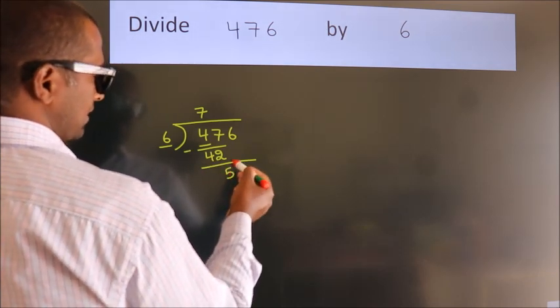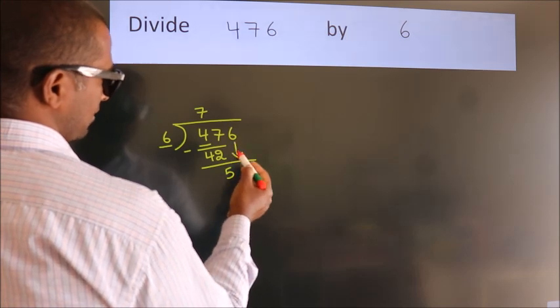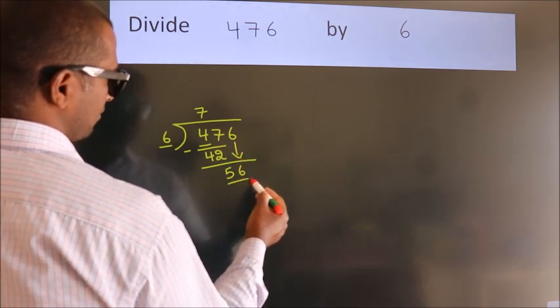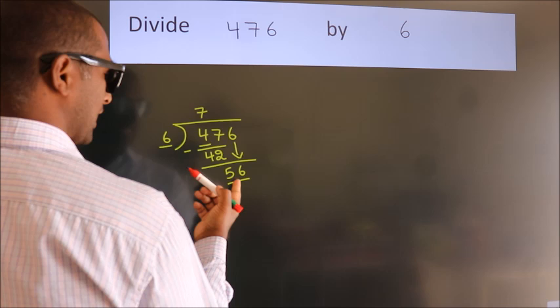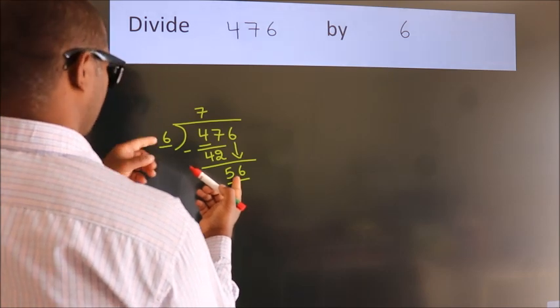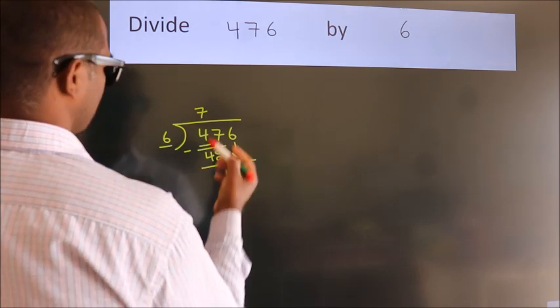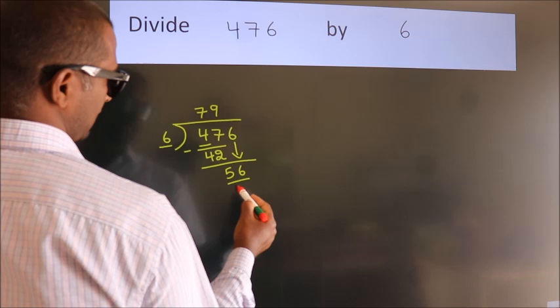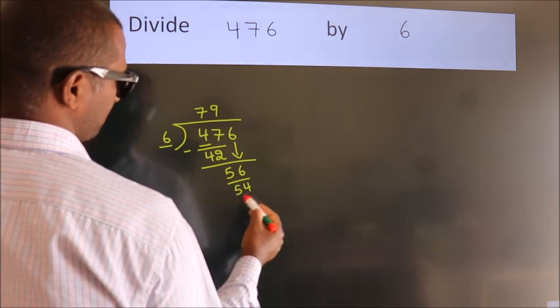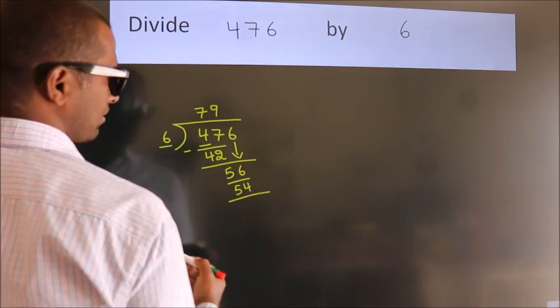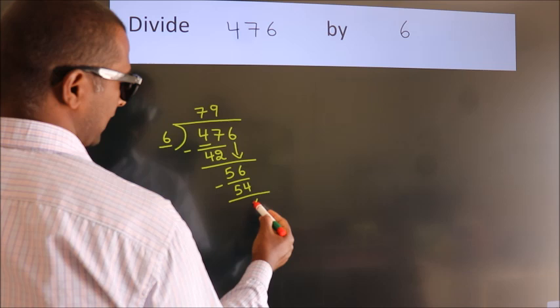After this, bring down the beside number. So 6 down. So 56. A number close to 56 in 6 table is 6 9s 54. Now we subtract. We get 2.